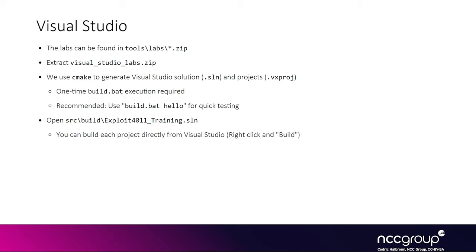You're going to need to extract the Visual Studio Labs.zip archive and then run the build.bat script once in order to generate the Visual Studio solution and project. This is because we rely on CMake to generate them. After that, you'll be able to open the solution and directly build the project from Visual Studio. Later we will use the additional zip labs named part2 and part3.zip, but you should not use them at the moment.